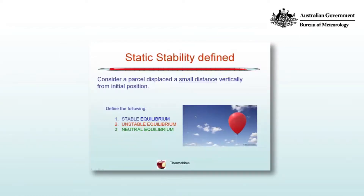Static stability defined. Let's consider a parcel of air displaced by a small distance vertically from its initial position. We're going to define the following terms: stable equilibrium, unstable equilibrium, and neutral equilibrium by considering what happens to the parcel after that initial displacement.